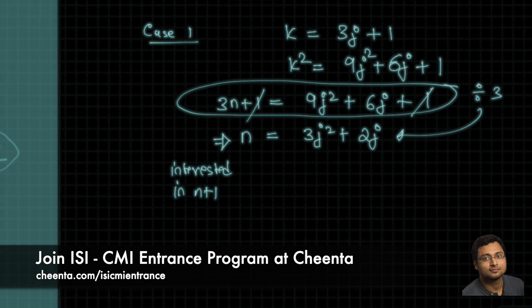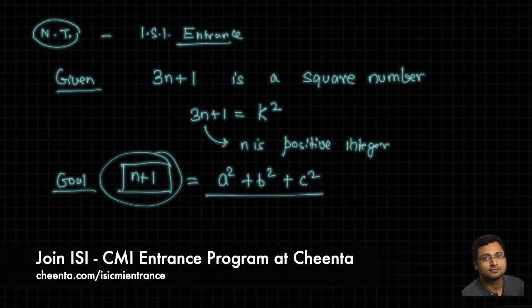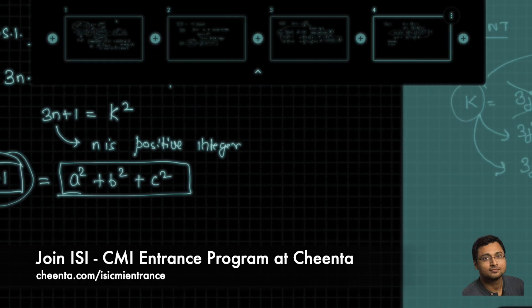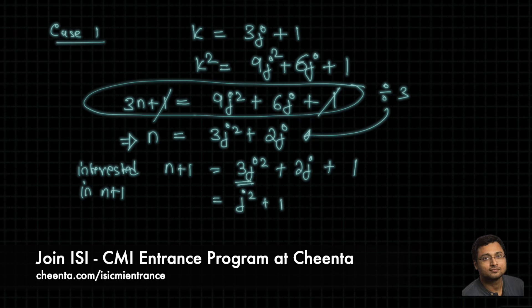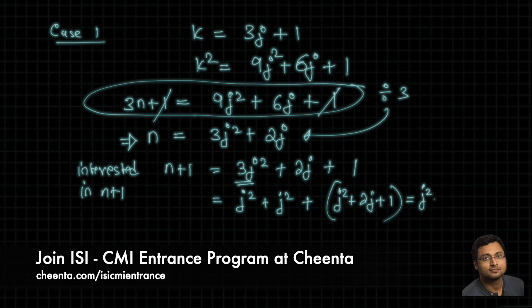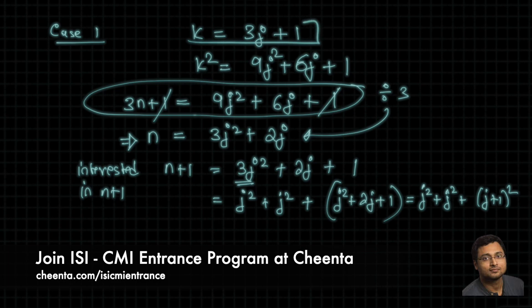Remember we are interested in n + 1, because we want to show it can be written as a sum of 3 squares. So n + 1 = 3j² + 2j + 1. We can write 3j² as j² + j² + j², giving j² + j² + j² + 2j + 1, and then bracketing: this is j² + j² + (j + 1)². It is precisely the sum of three square numbers!